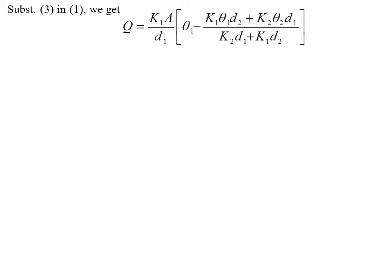Substituting theta into the previous equation, you can write Q equals K1·A divided by D1, times (theta 1 minus theta). Substituting the expression for theta, this becomes K1·D2 times (theta 1) plus K2·D1.